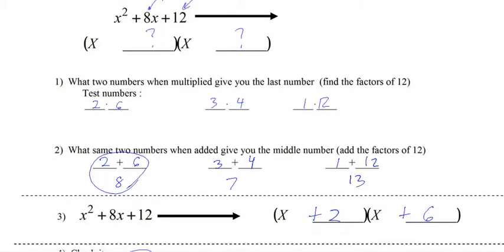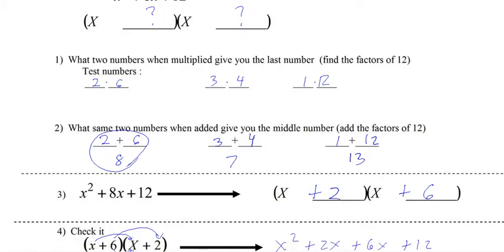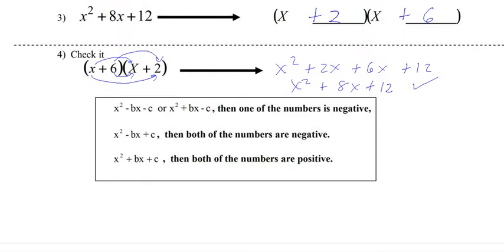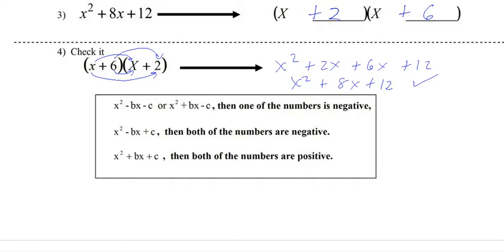So you find two, you take the last number, write all the factors and those factors that add up to give you the middle, that's your answer. All right, so there are some little rules right here for negatives and I'm going to explain those on the next page.